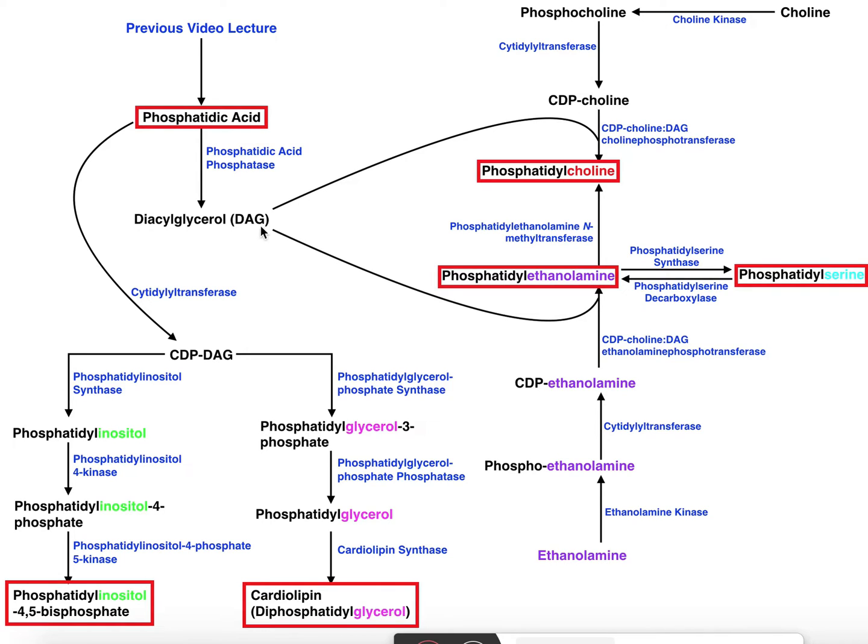Now we can incorporate the diacylglycerol or DAG into it. This is going to be catalyzed by CDP choline-DAG choline phosphatransferase. The major thing to really notice is what the enzyme is doing. It's taking the CDP choline and having diacylglycerol do a nucleophilic attack and knock off the CMP. The CMP group is going to get knocked off, and essentially the DAG is going to be bound to the phosphate of phosphocholine. And what you'll get ultimately is phosphatidylcholine.